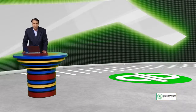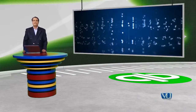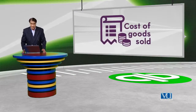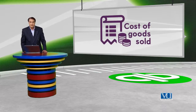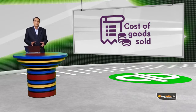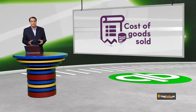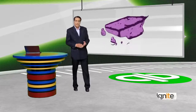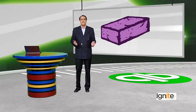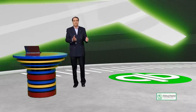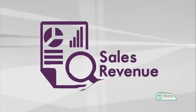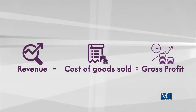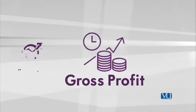This is our revenue. Cost of goods sold — hamaara cost of goods sold woh hai. For example, if we have material — cement, bricks — these things we sell, then we have to find out what our cost of goods sold is. We need to identify our cost of goods sold in order to determine profitability.